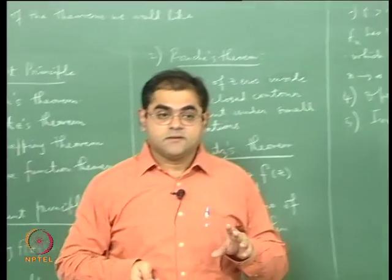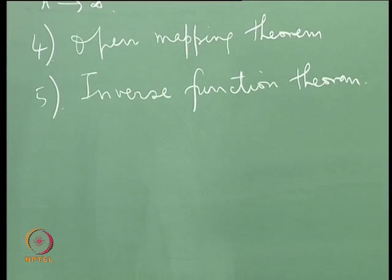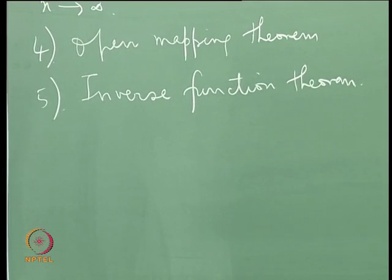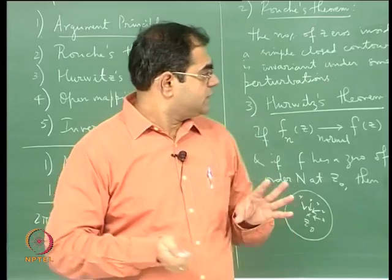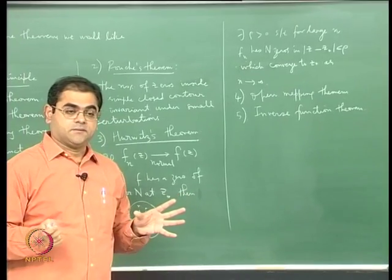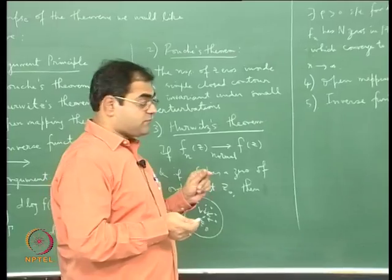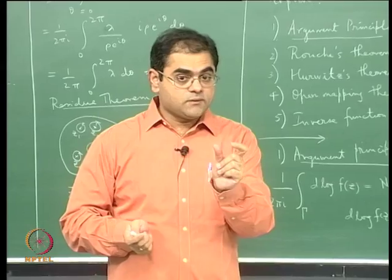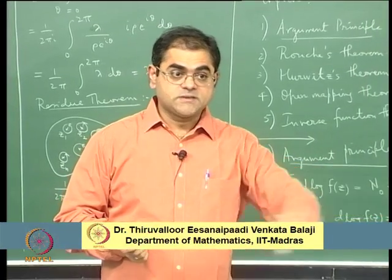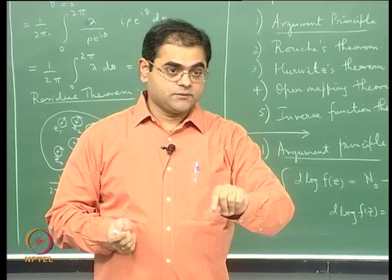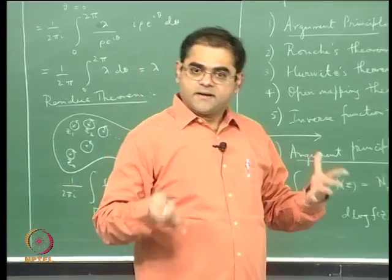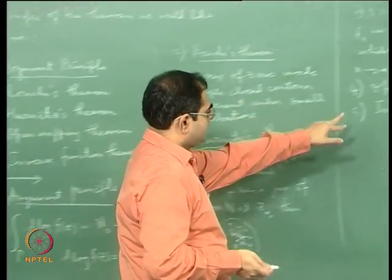The more general version of the open mapping theorem says you do not even need the derivative to be non-vanishing — you just need a non-constant analytic function, and it will always map open sets to open sets. In particular, if the derivative is nonzero, in a neighbourhood of that point the function is a holomorphic isomorphism — injective, onto an open image — and the inverse function is also holomorphic, given by a nice integral formula. That is what the inverse function theorem says.